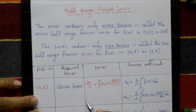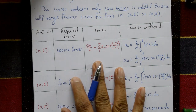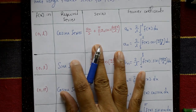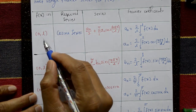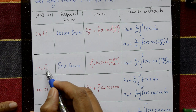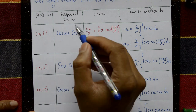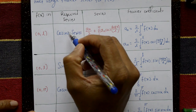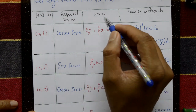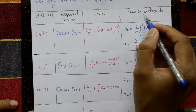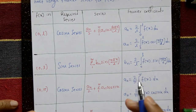Now see this table. For f(x), the intervals are 0 to l and 0 to π. The required series can be a sine series or a cosine series, and these correspond to specific Fourier coefficients.